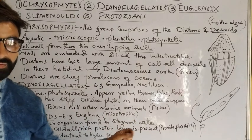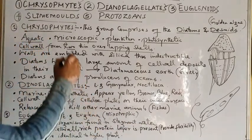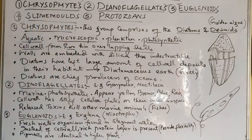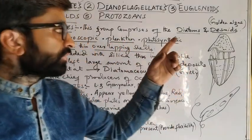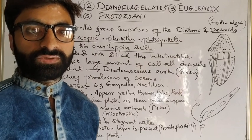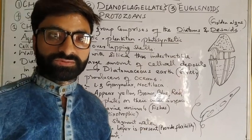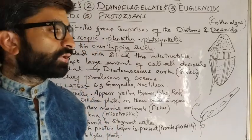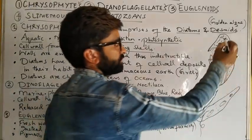This is a topic of Class 11. So chrysophytes — this major group chrysophytes comprises of desmids and diatoms. Both are aquatic organisms, and desmids are also called golden algae.